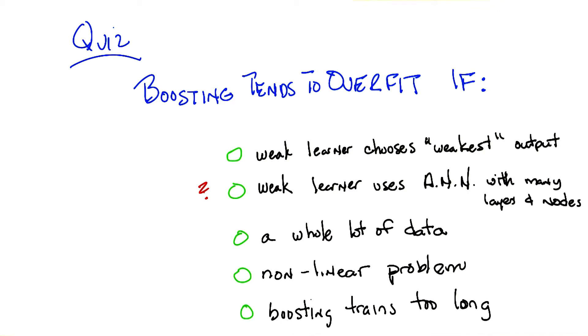Weak learner chooses the weakest output. Well, boosting is supposed to work as long as we have a weak learner. It doesn't matter if it chooses the weakest or the strongest. All that matters is it does significantly better than a half. So I feel like the only one, the only way these choices that is likely to be true is the second one. And that is, in fact, correct.